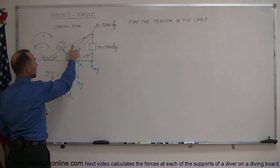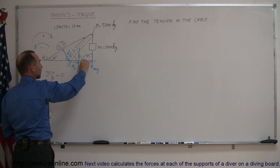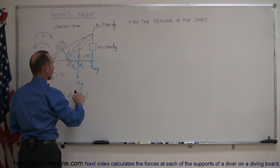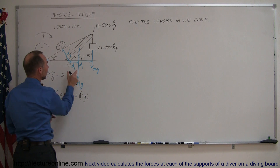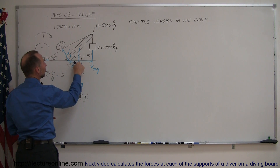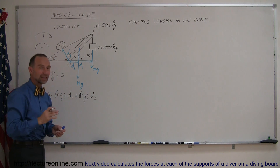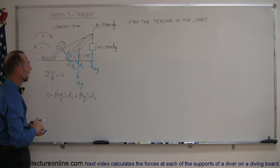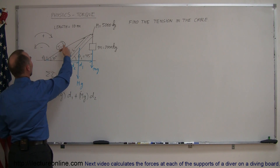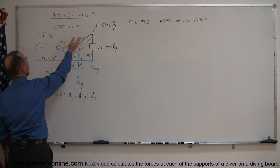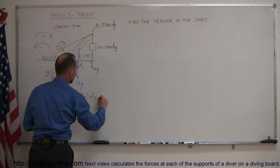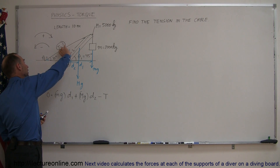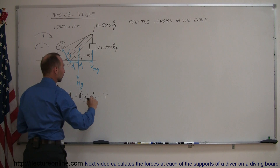The weight of the beam would also cause the beam to rotate clockwise if it were the only force, so we have plus big Mg times d2. Notice that plugging in d1, d2, and d3 without first finding their values makes it easier to set up the equation. Finally, the tension in the cable would pull the beam in the opposite, negative direction — minus T times d3, the perpendicular distance from the line of action of the tension to the pivot point.